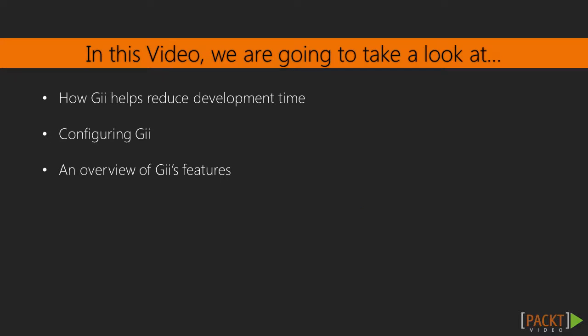We'll take a look at exactly what Gii is, why we will want to use it, and how to configure it. As you may already be aware, Yii implements the model-view-controller pattern. When using an MVC-based framework, developers often spend a lot of time copying and pasting common code and then editing it to meet the requirements of a specific application feature. This process is both time-consuming and error-prone. With Gii, we can use a web-based interface to quickly generate model, view, and controller code that is tailored to our needs.